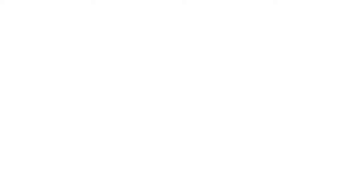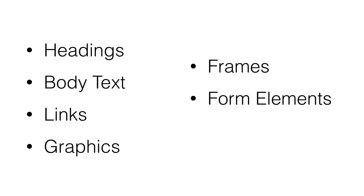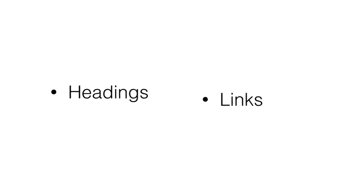To understand how navigating a web page with a screen reader works, we must first understand the common elements that make up a web page. A web page can be made of several different elements, which include headings, body text, links, graphics, frames, form elements, and more. Let's focus on two of the most common elements: headings and links.